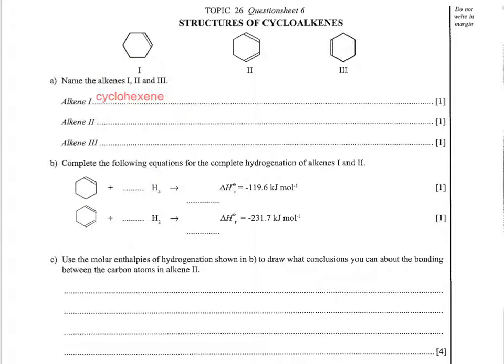So the first one shouldn't be any trouble—we're asking you to name alkene number one. As you can see, it's cyclohexene. However, in alkene number two and alkene number three, you've got two double bonds, but they're in slightly different places.